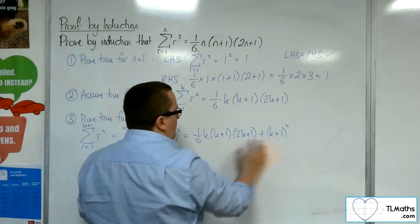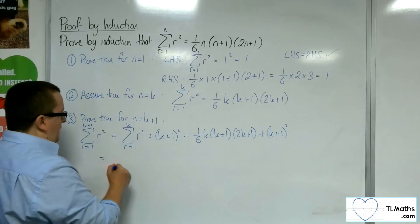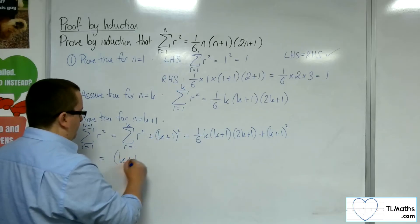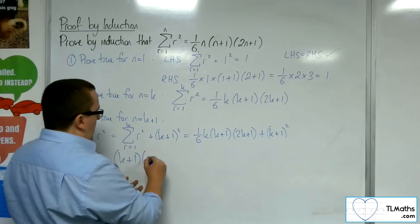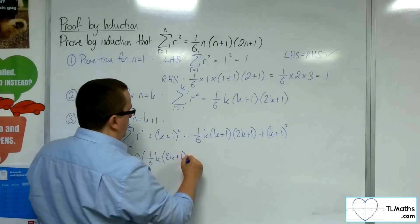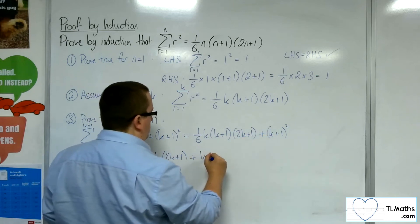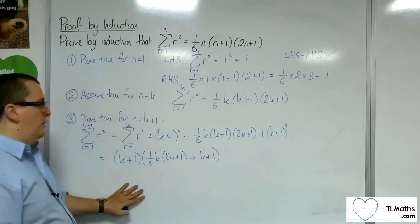Now, I can see that I've got a common factor of k plus 1 in both terms. So, I can factor that out. I've got k plus 1, and then I've got this 1/6 k, 2k plus 1 that's left there, the 1/6 k and the 2k plus 1. And I've got a k plus 1 that is left as well.